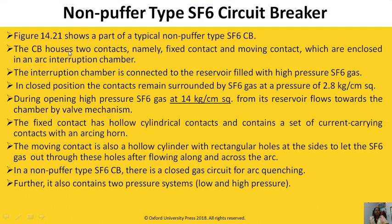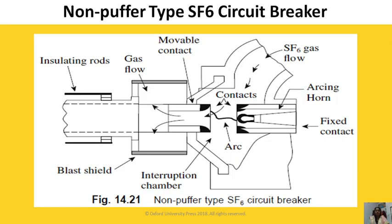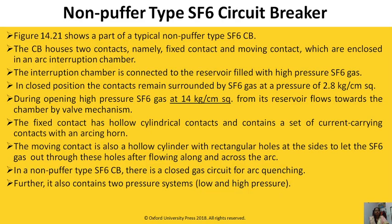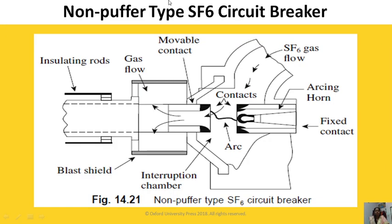Figure 14.21 shows a part of a typical non-puffer type SF6 circuit breaker. SF6 circuit breakers are of two types: non-puffer type and puffer type. In the non-puffer type, a gas reservoir is connected to the interruption chamber.